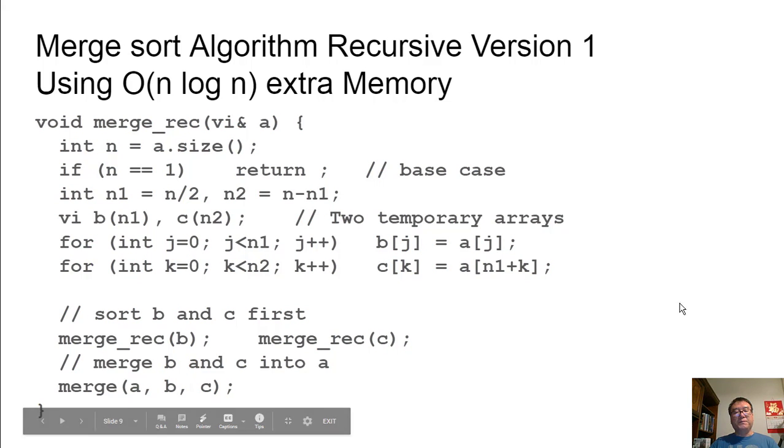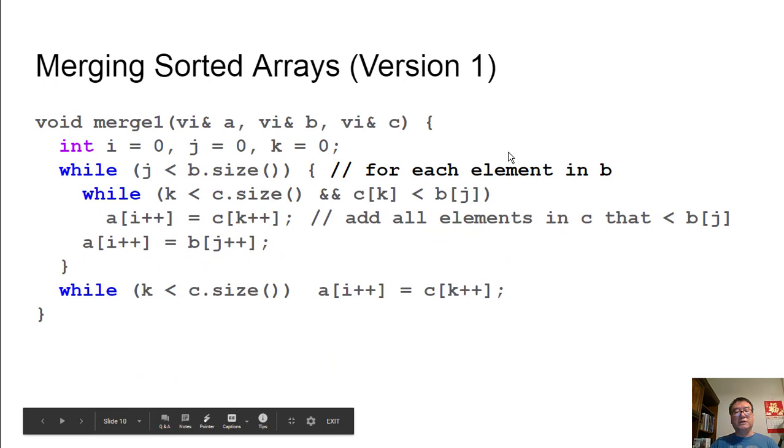This uses n log n extra memory because in this call, we allocated two new arrays. Together, they have the same size as A. And this will happen at the next layer of recursive calls because there are log n layers. So we actually allocated n log n extra memory. Now let's look at this merge code in a little bit more detail.